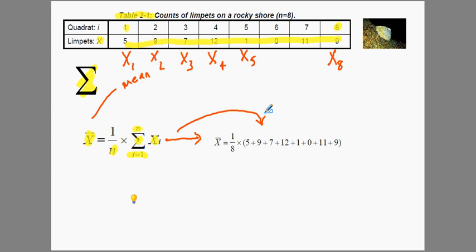So it says first of all the front part is 1 divided by the number of observations there is. So that's 1 divided by 8. And then we add up the observations. So 5 plus 9 plus 7 plus 12 plus 1 plus 0 plus 11 plus the last observation, which is 9.